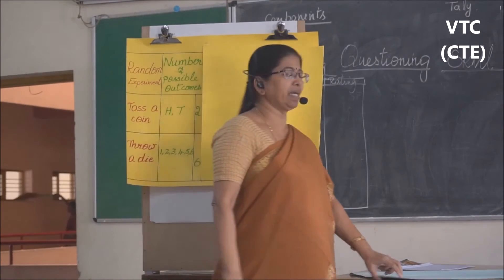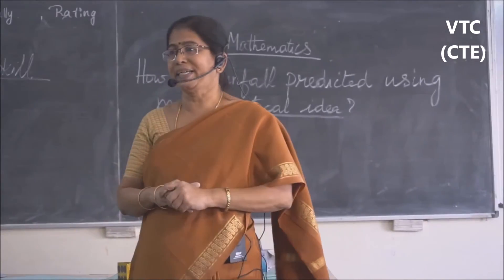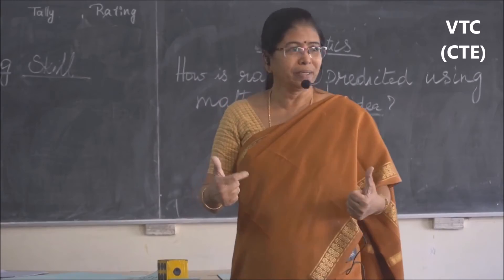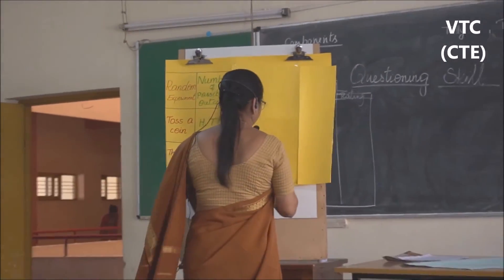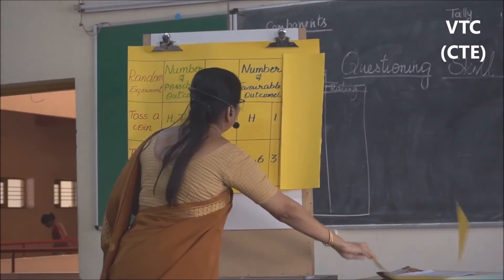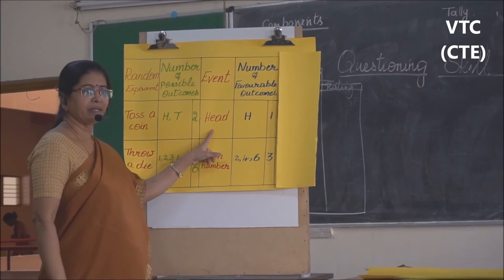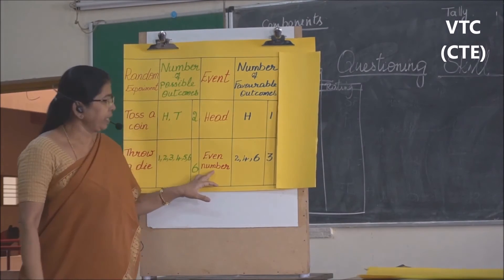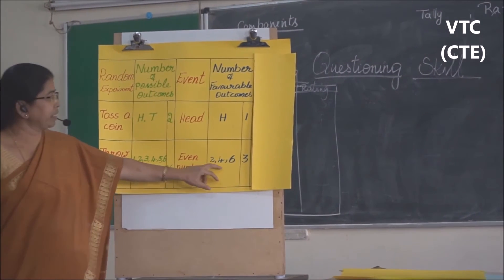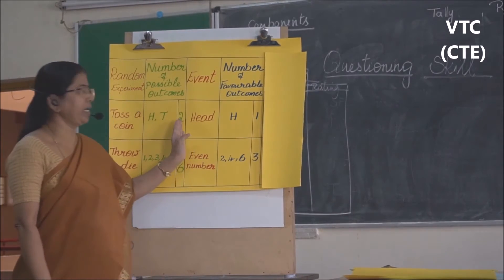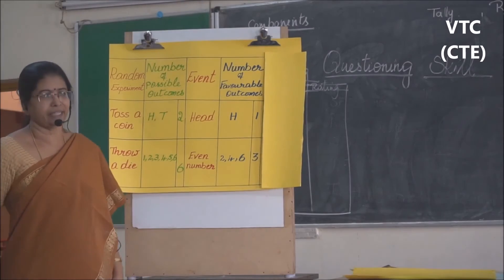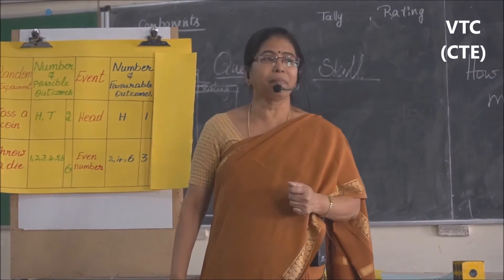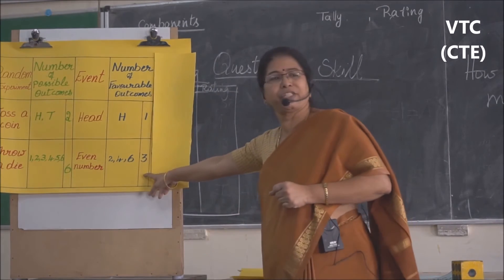When a random experiment is conducted, an event is always predicted. For example, when a coin is tossed, let us take the event of getting heads — how many outcomes are favorable? Only one, which is heads. Now, for getting an even number on a die, how many outcomes are favorable? Three. So, heads: one out of two, written mathematically as one by two. Even number: three out of six, written as three by six.